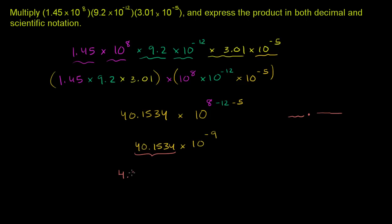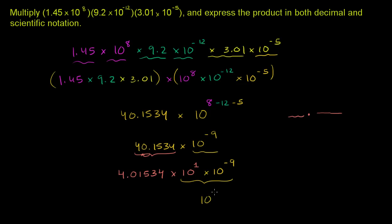So we need to rewrite 40.1534 in scientific notation. This is the same as 4.01534 times 10, because to go from 40 to 4 we move the decimal one place to the left, which is dividing by 10, so we multiply by 10 to compensate. That gives us 4.01534 times 10 to the first, times 10 to the negative 9th, which equals 4.01534 times 10 to the negative 8th power.